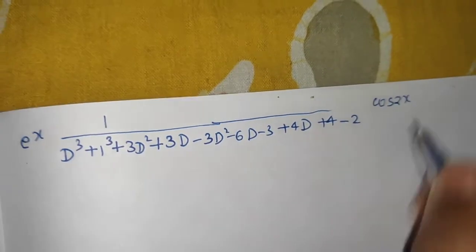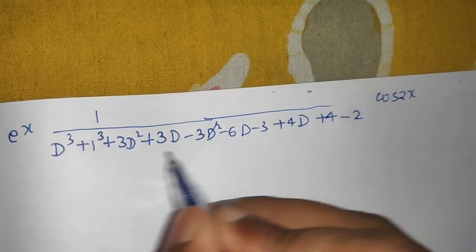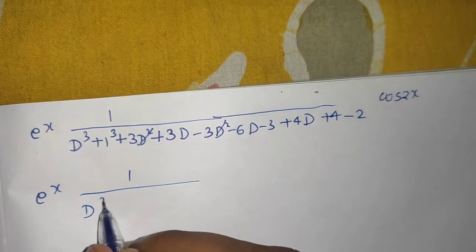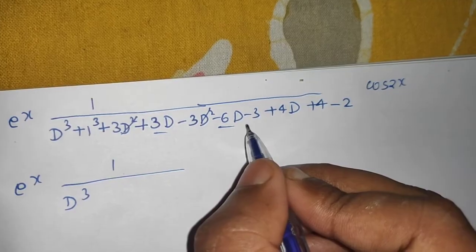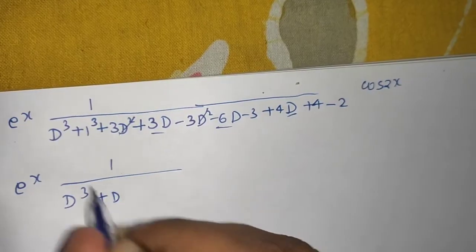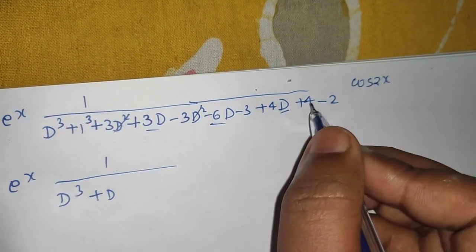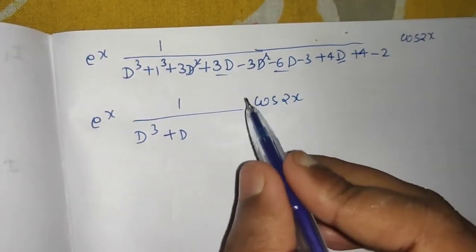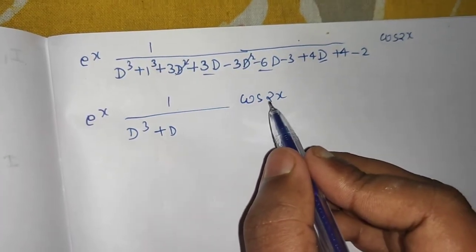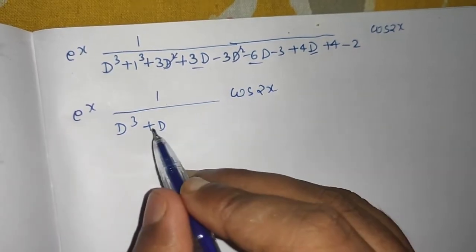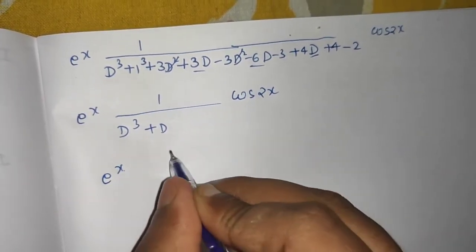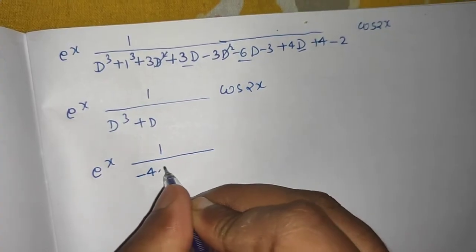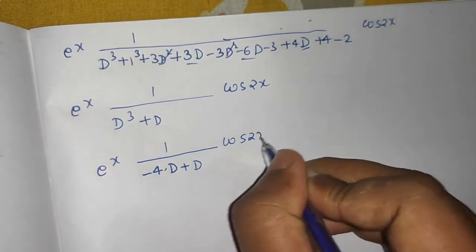After collecting terms: the 3D² and -3D² cancel. We are left with D³ + (3-6+4)D + (1-3+4-2) = D³ + D + 0. So the denominator simplifies to D³ + D, operating on cos2x. Now applying the cos(ax) rule: replace D² with -a² = -4. So D²·D becomes (-4)·D, giving -4D + D = -3D in the denominator.